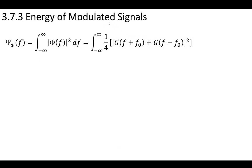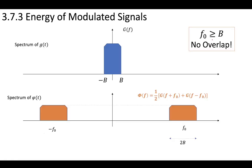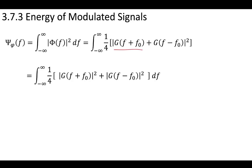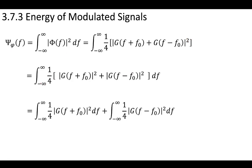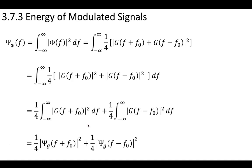We have this one-quarter term, and if we smartly selected f-naught greater than the bandwidth, there is no overlap between the original signal's low-frequency bandwidth and the modulated signal's shifted frequency bands. Because there's no overlap, we can separate the terms out — instead of having both shifted components under the same square, we can put them in their own separate squares. This allows us to break the integral into two integrals, while still carrying the one-quarter power term.